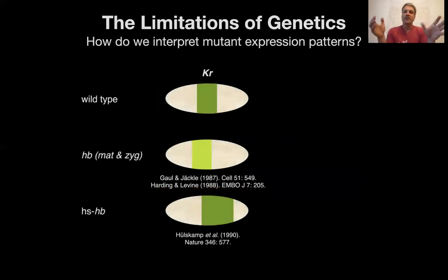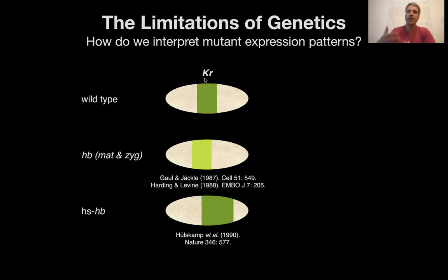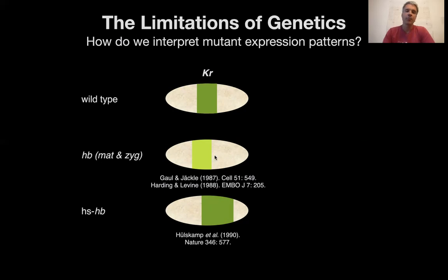Another really big problem is that it is very difficult to interpret mutant expression patterns. An example here from the gap genes in Drosophila: take a wild-type embryo — here's my simple depiction of the expression pattern of the gap gene Krüppel in the middle. Krüppel interacts with another gap gene called Hunchback, which is both maternally and zygotically expressed, making the genetics really complicated. If you mutate both the maternal and zygotic contribution of Hunchback, you'll see that Krüppel moves into the anterior of the embryo — expanding into the area where Hunchback used to be expressed.